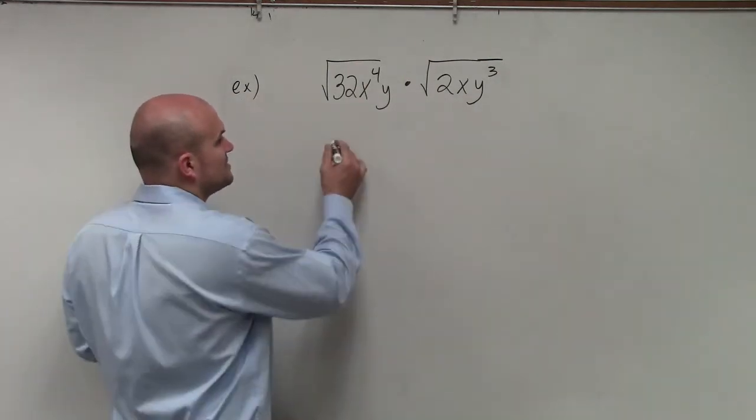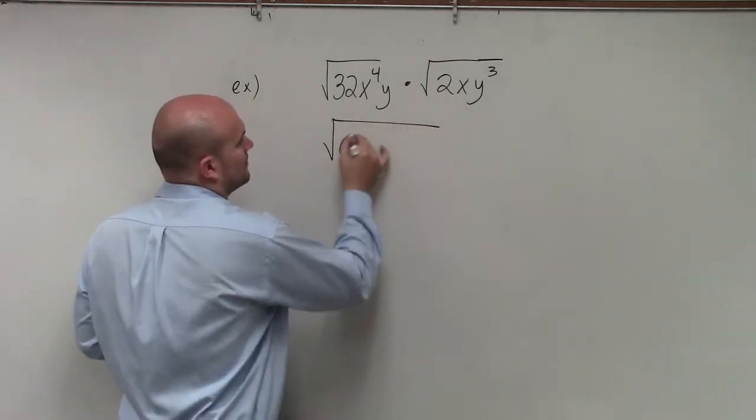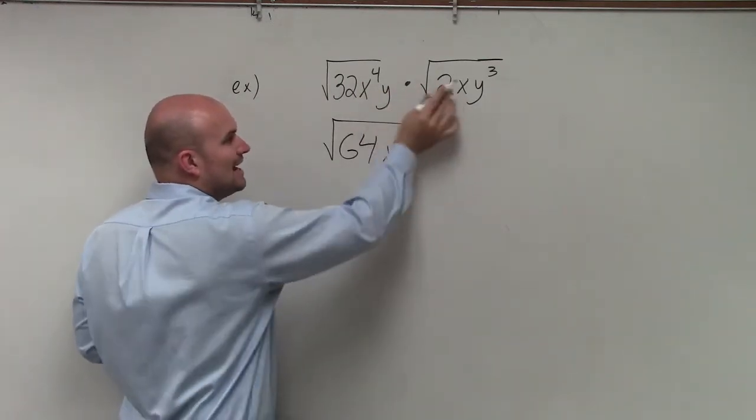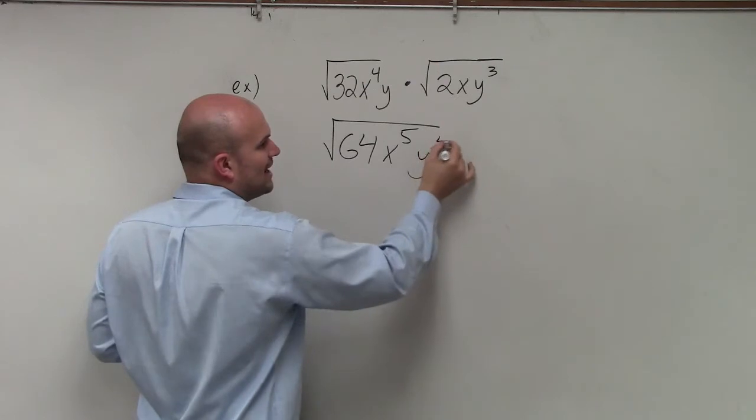It's going to give you 64. x to the fourth times x is x to the fifth. y times y to the third is y to the fourth.